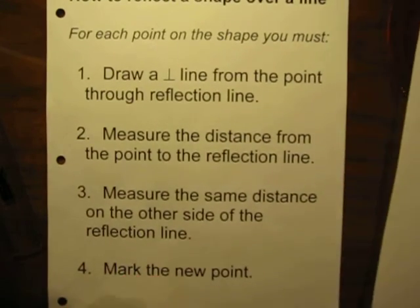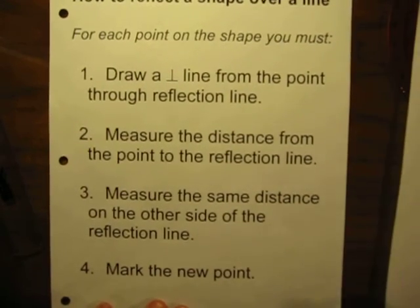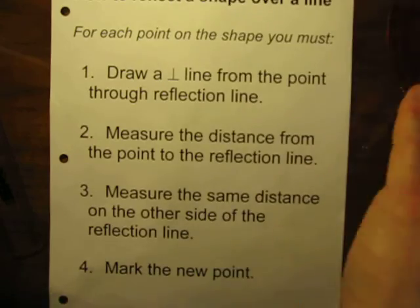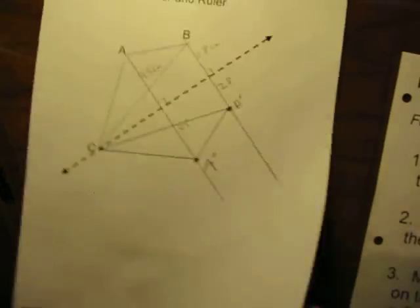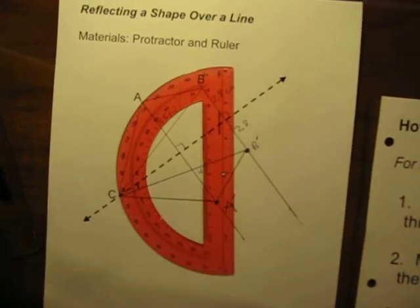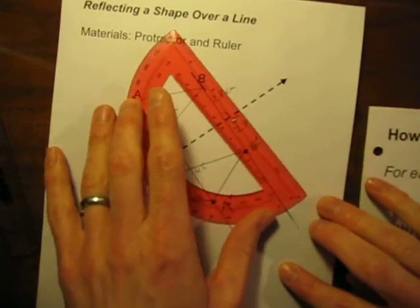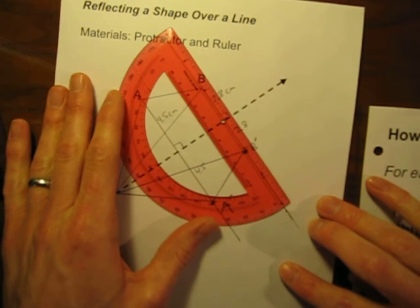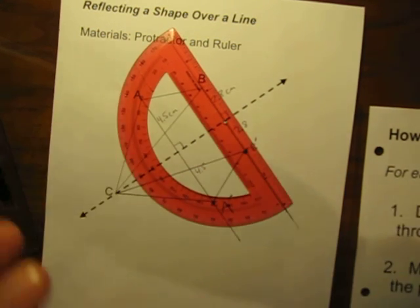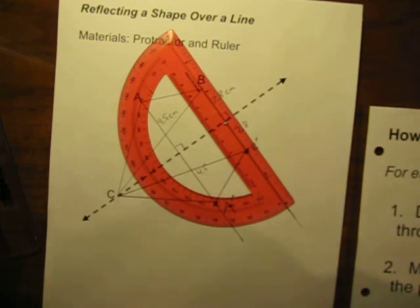So hopefully that makes some sense to you. Feel free to copy this down from the video if you would like to pause it and take a look at that, if that would help. But hopefully this makes it understandable. Like I said earlier in the video, the trickiest part, I think, is just figuring out, okay, I need to do something with my protractor, how am I going to lay this down on the paper to measure out that 90 degree angle. But hopefully this video will help clear that up for you.